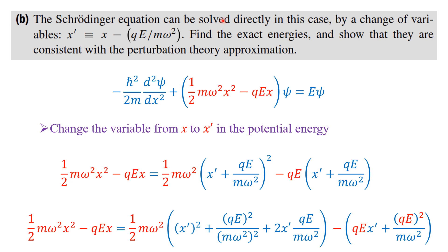Part B: The Schrödinger equation can be solved directly by changing the variable X' = X - QE/(mω²). We need to find the exact energy and show it is consistent with the perturbation theory approximation from Part A.